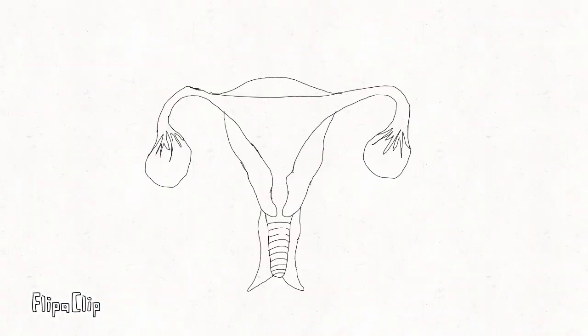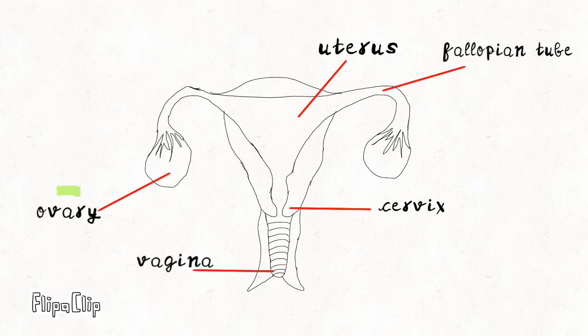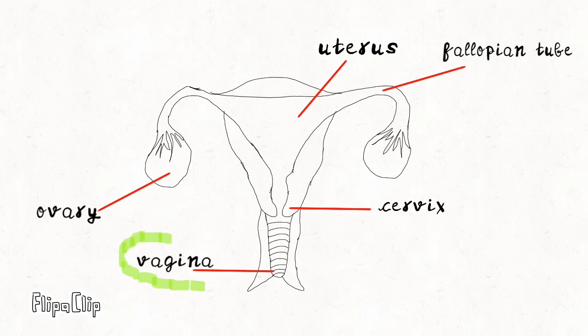This is the female human's reproductive organ. The parts of the female human reproductive organs include the ovary, fallopian tube, uterus, cervix, and vagina.